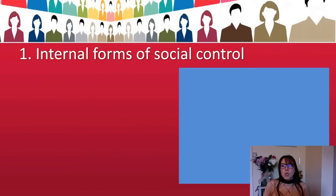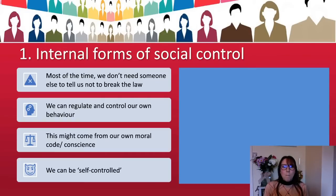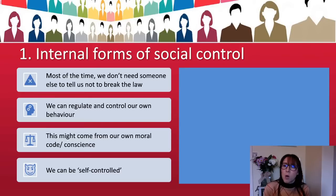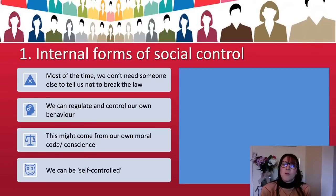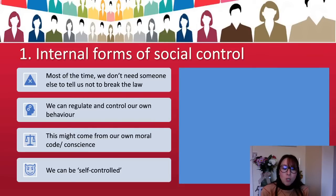Number one, then — internal forms of social control. Most of the time, we don't need someone else to tell us not to break the law. Most of the time, you just know that you should and should not do certain things. We regulate and control our own behaviour. You don't need someone to tell you to put your clothes on before you leave the door, because you regulate yourself — you know that's against the norms and essentially against the law. This might come from your own moral code or conscience, and these are self-controlled.